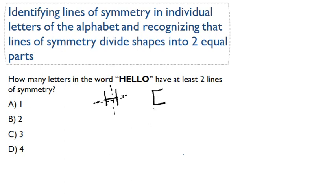All right, now how about E? Well, E has one line of symmetry, so E would not work. So let's give a check mark for H, and E does not have two lines of symmetry.